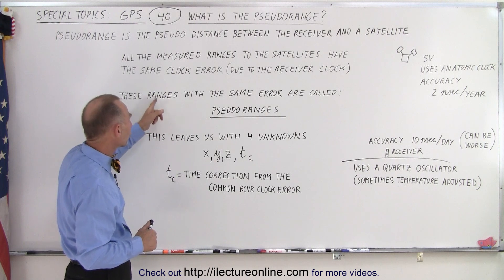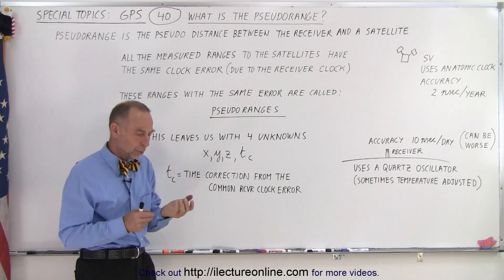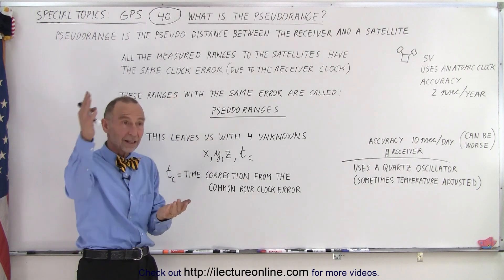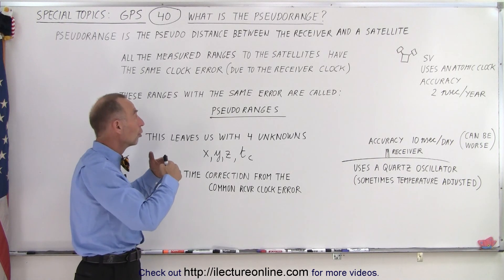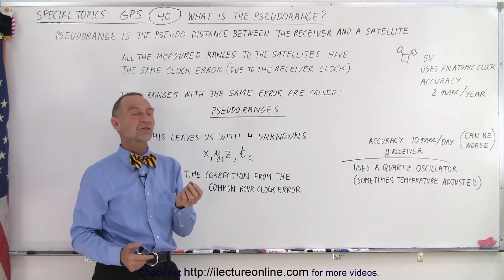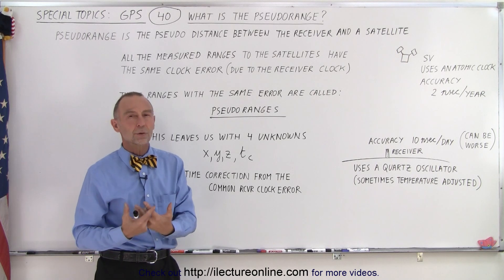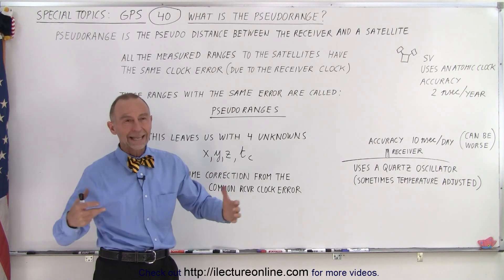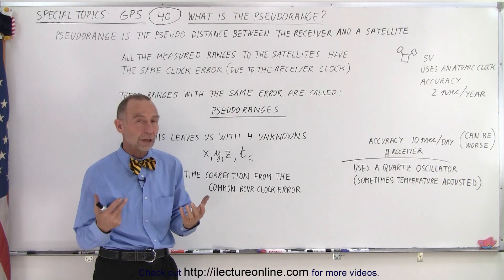And so therefore we can then say that all those ranges that we calculate between the receiver and the various satellites are all then called pseudo ranges because they all have the same error. And by definition, since they all have the same error, we're going to call them all pseudo ranges.